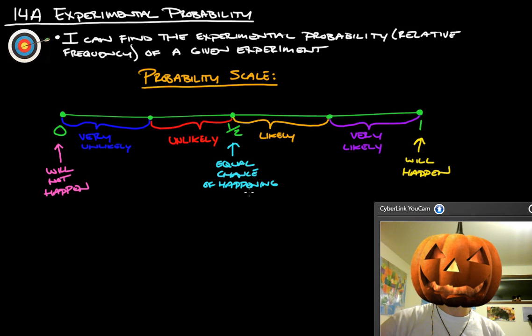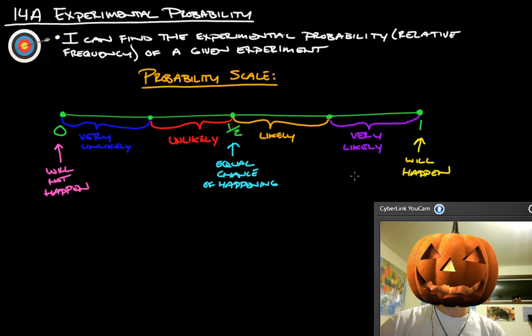Then you have everything else in between. One half is equal chance of happening. Very unlikely is the bottom quarter, the second quarter is unlikely, third quarter is likely, and then the last quarter is very likely.